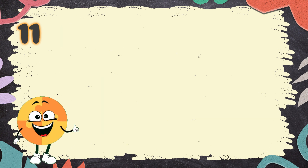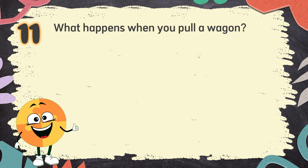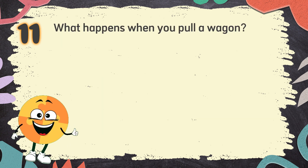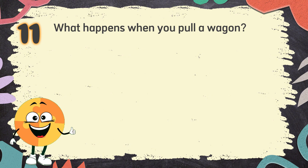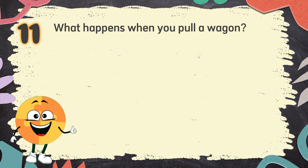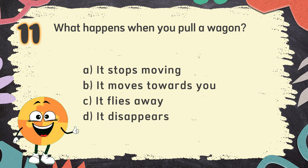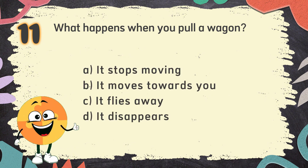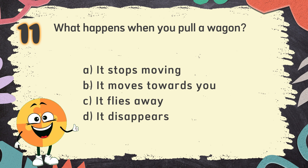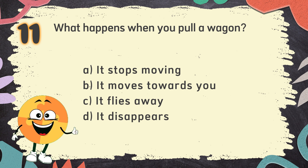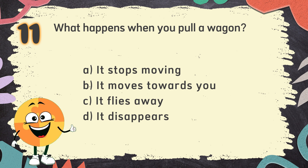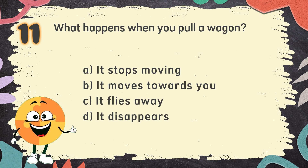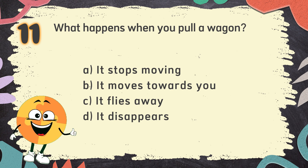Number 11. What happens when you pull a wagon? The choices are: A. It stops moving, B. It moves towards you, C. It flies away, D. It disappears.